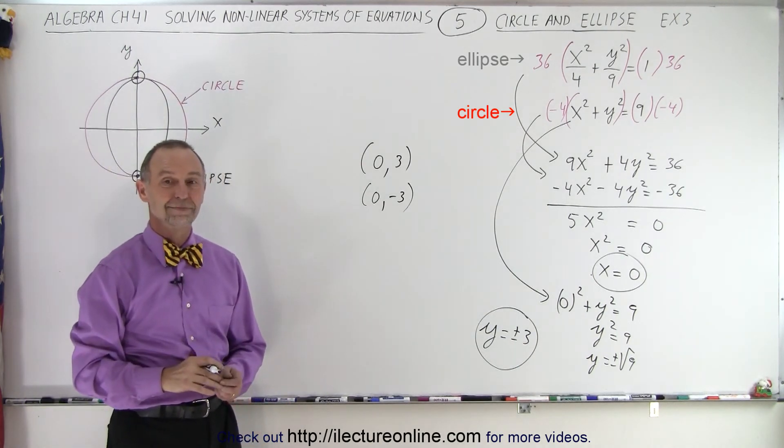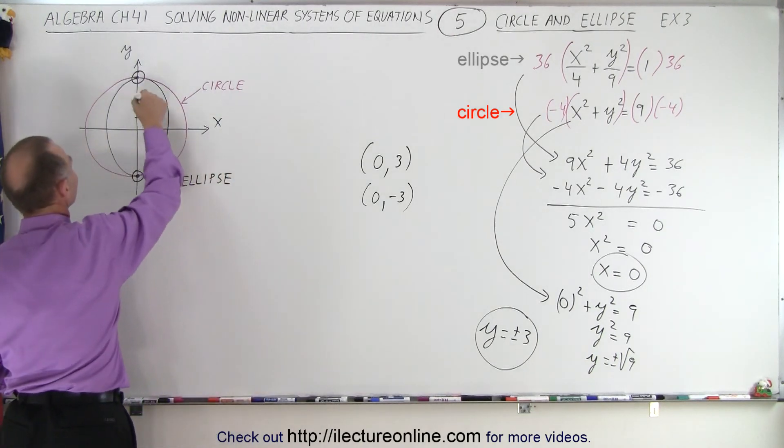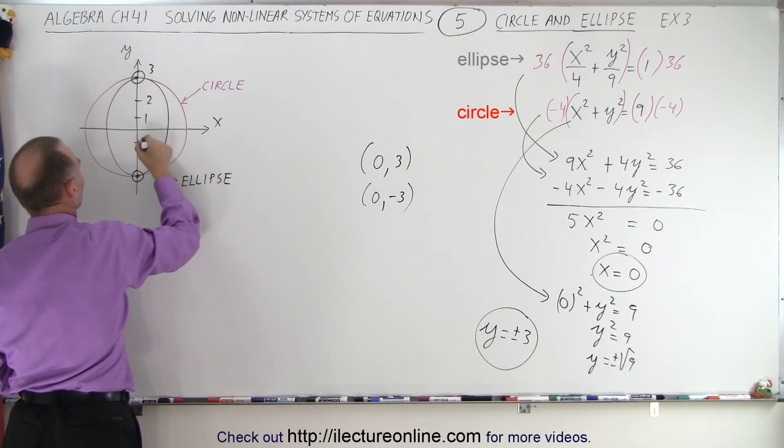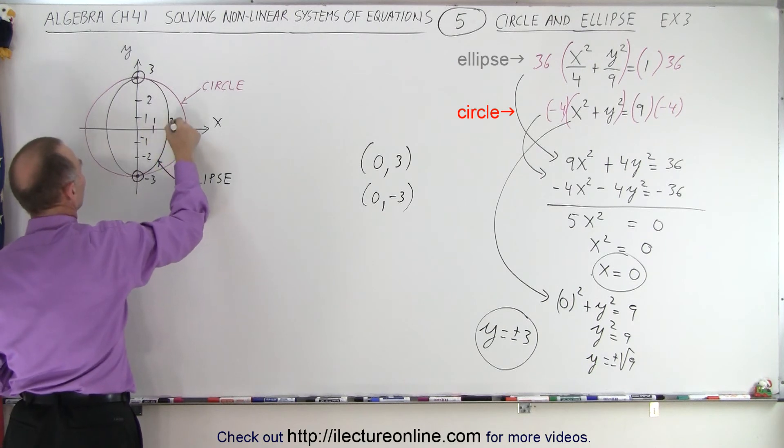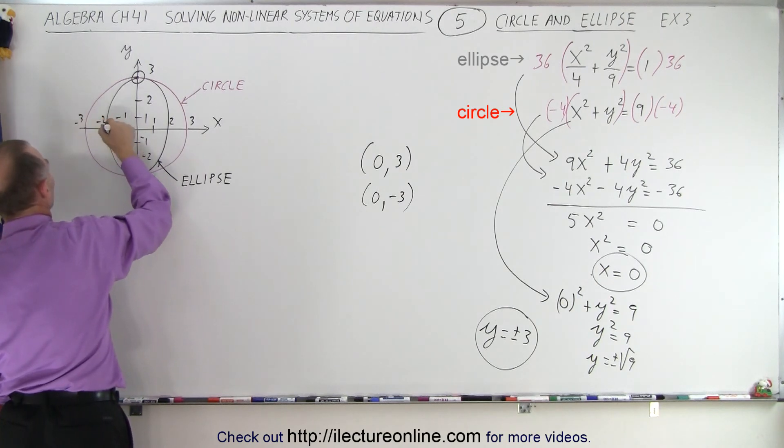Why don't you just label it on the graph? Just label it in the middle of the... 1, 2, 3, negative 1, negative 2, negative 3, 1, 2, 3, and negative 1, negative 2, and negative 3 for these points right there.